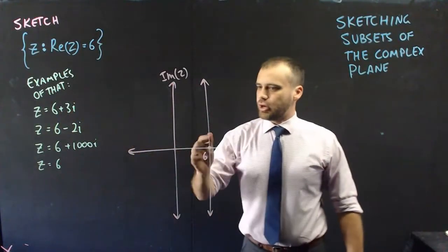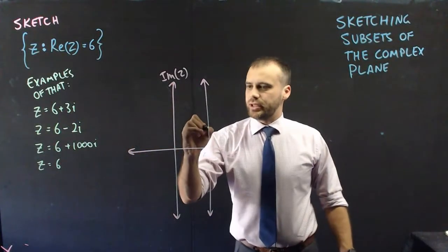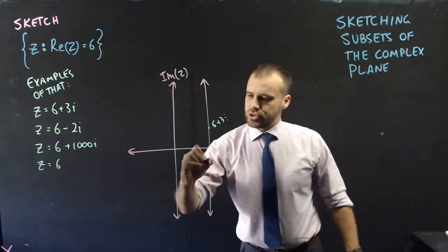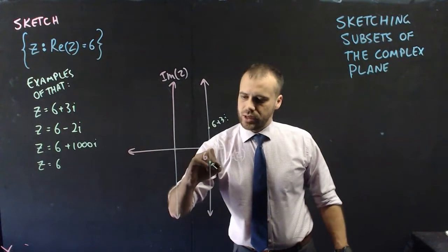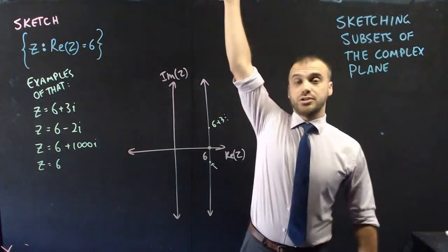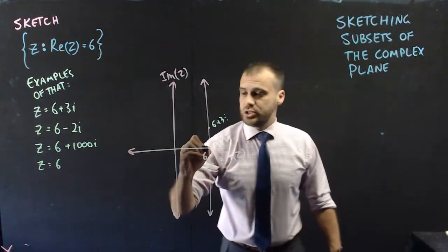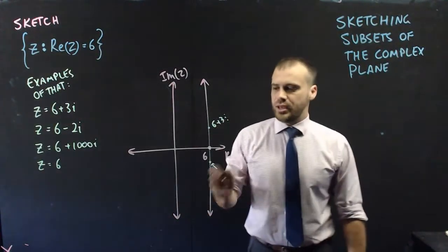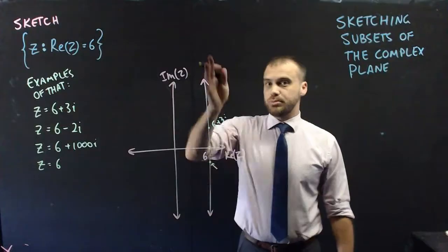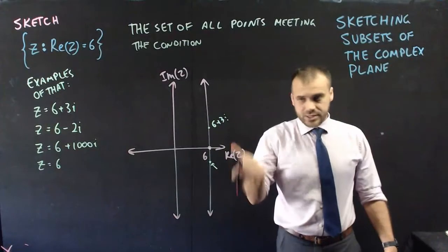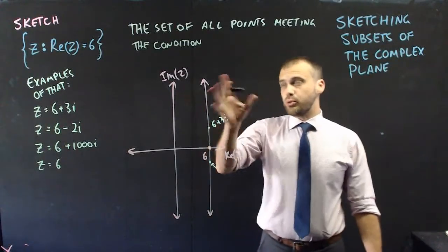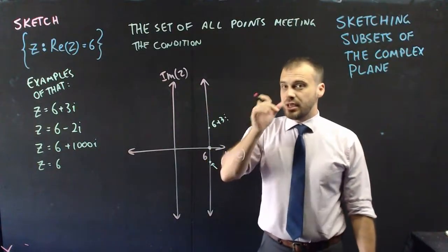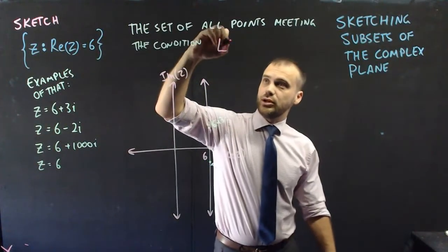Instead, I can show it graphically. On the Argand diagram, it's just a vertical line. 6 + 3i is here, 6 − 2i is down here, 6 + 1000i is way up here, and plain old 6 would be right there. We show all of them by drawing in that vertical line.